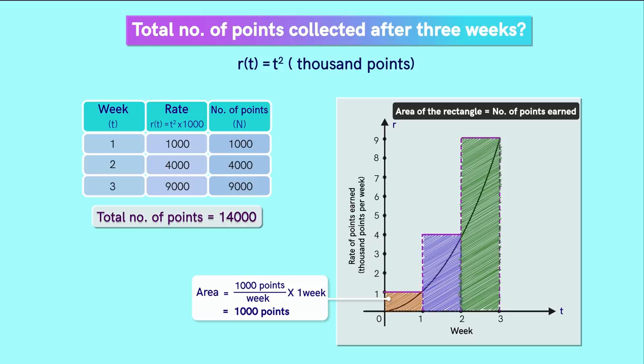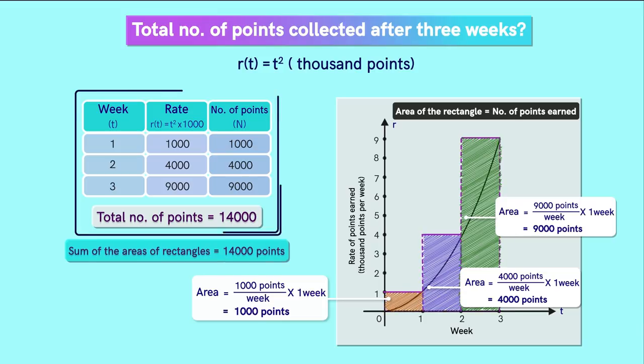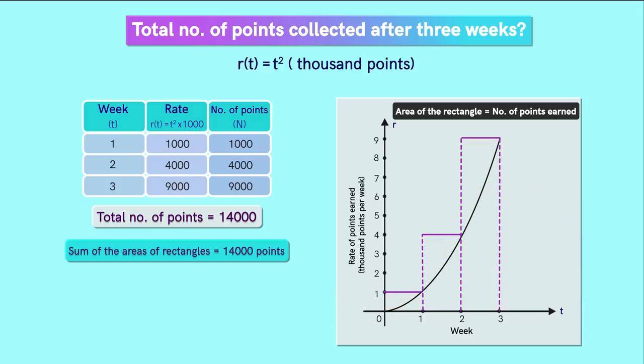Can you find the areas of the other two rectangles? For the second rectangle, it will be equal to 4000 points and for the third it will be 9000 points. So we get the sum of the areas of these three rectangles to be equal to 14000 points. This is the answer we got using this calculation. So we see that the process of addition here simply becomes finding the total area covered by these rectangles.